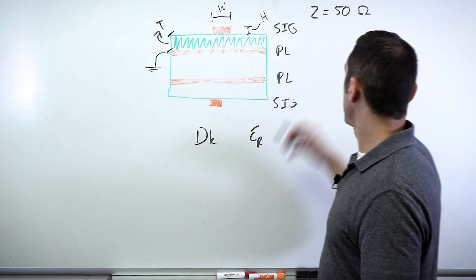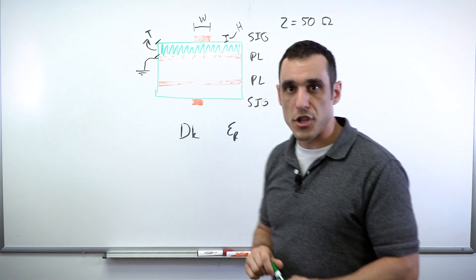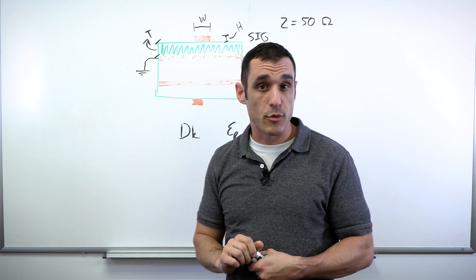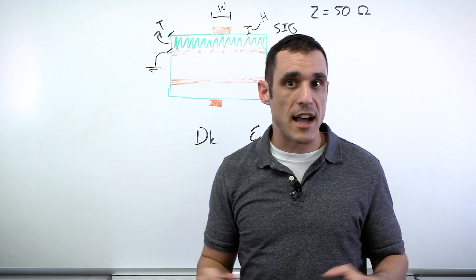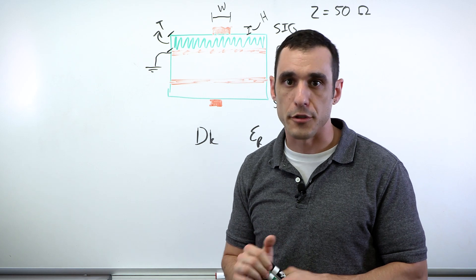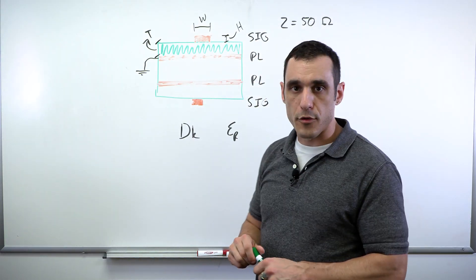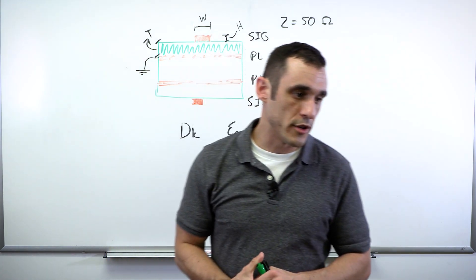And all of these come together to give you a formula for the trace impedance. Most calculators will just use the IPC 2141 standard. And that's perfectly fine if you don't need to worry about working above maybe a gigahertz or two. If you're working at lower frequencies, you can use either formula.